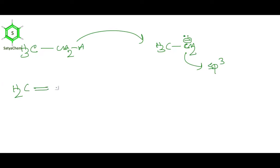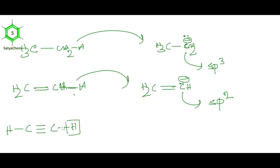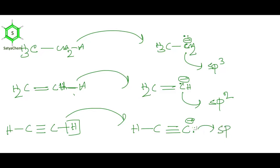For ethylene (sp2 hybridized carbon), if the hydrogen is abstracted by a base, the corresponding carbanion has the electron pair residing on an sp2 hybridized orbital. For acetylene (sp hybridized carbon), abstraction gives a carbanion with the electron pair on an sp orbital. Moving from sp3 to sp2 to sp, the percentage of p character decreases and percentage of s character increases.